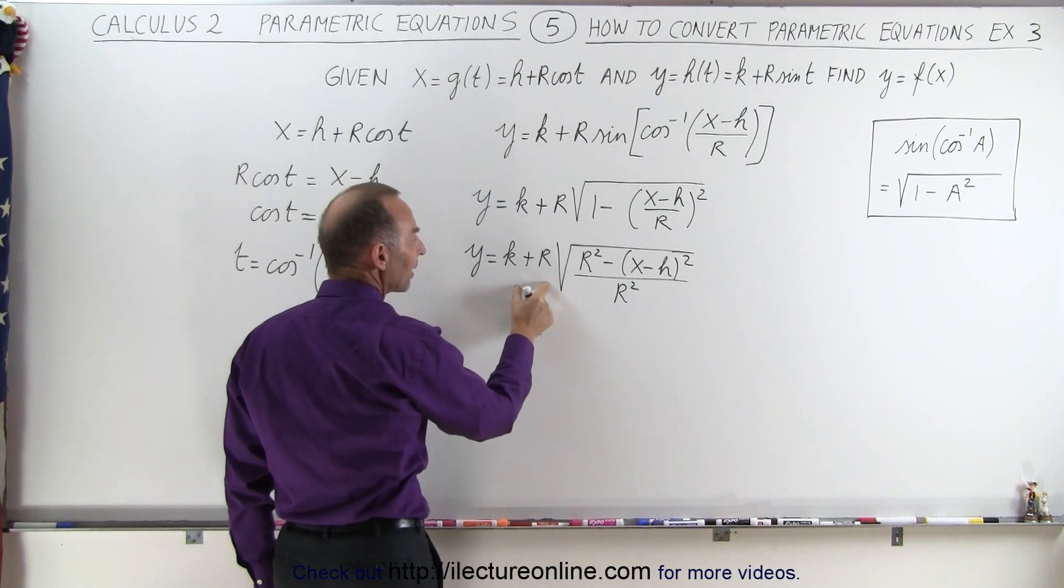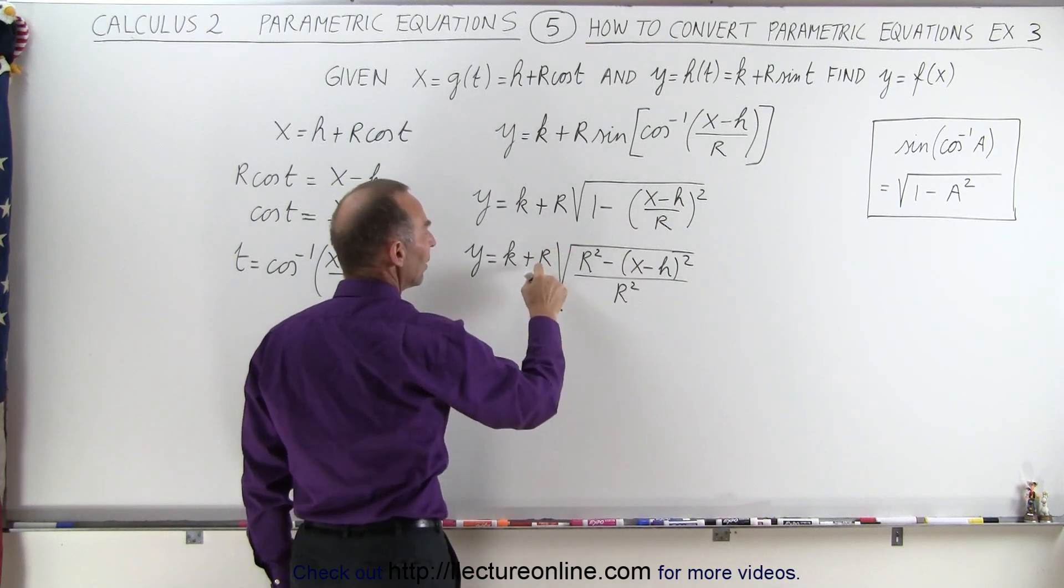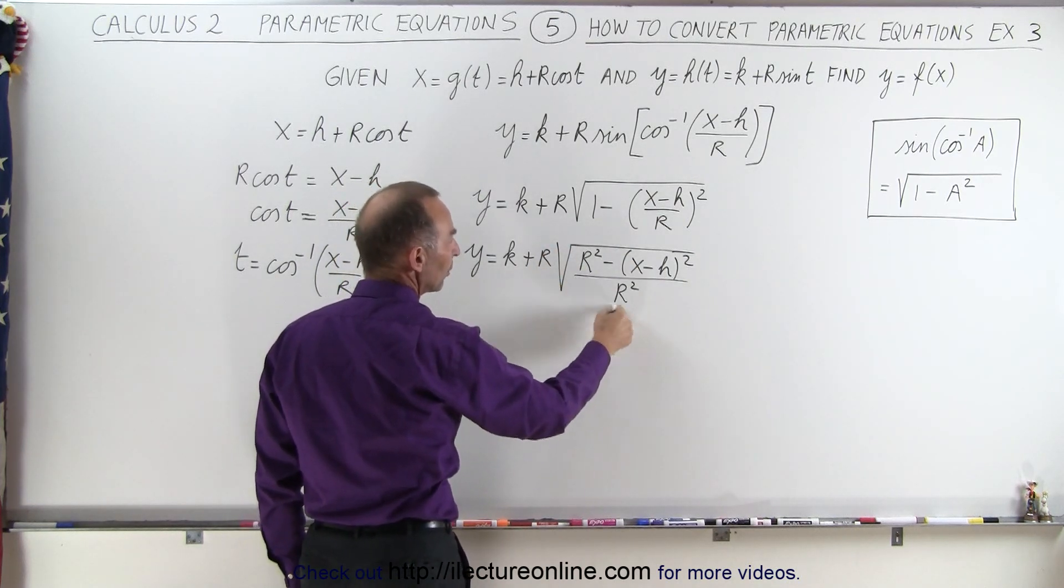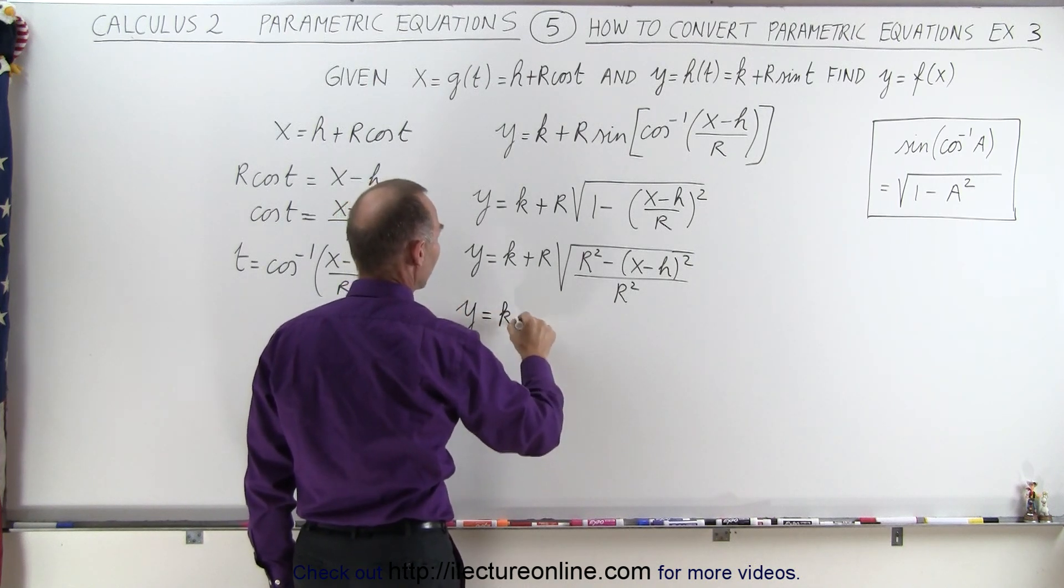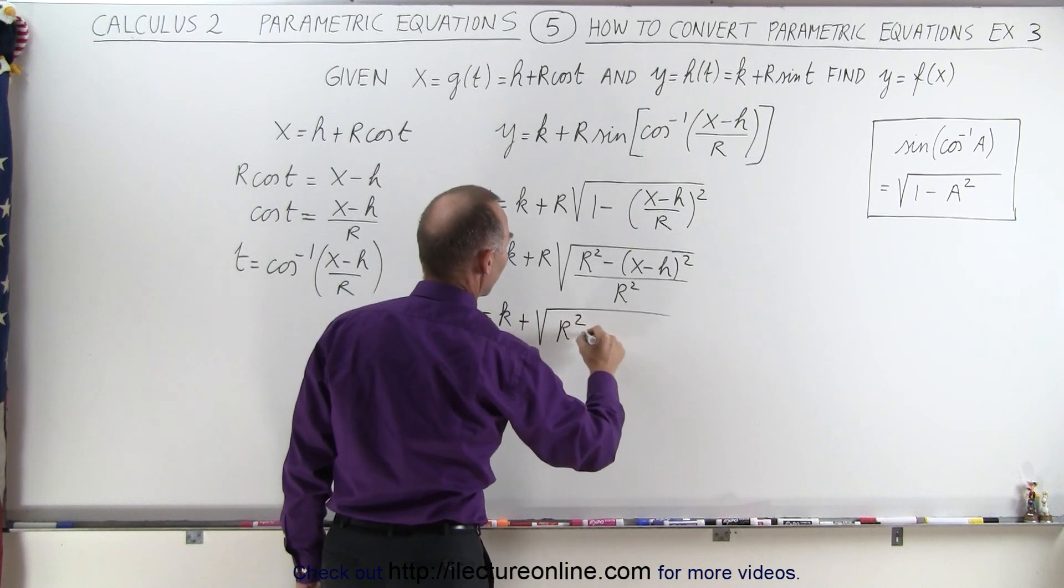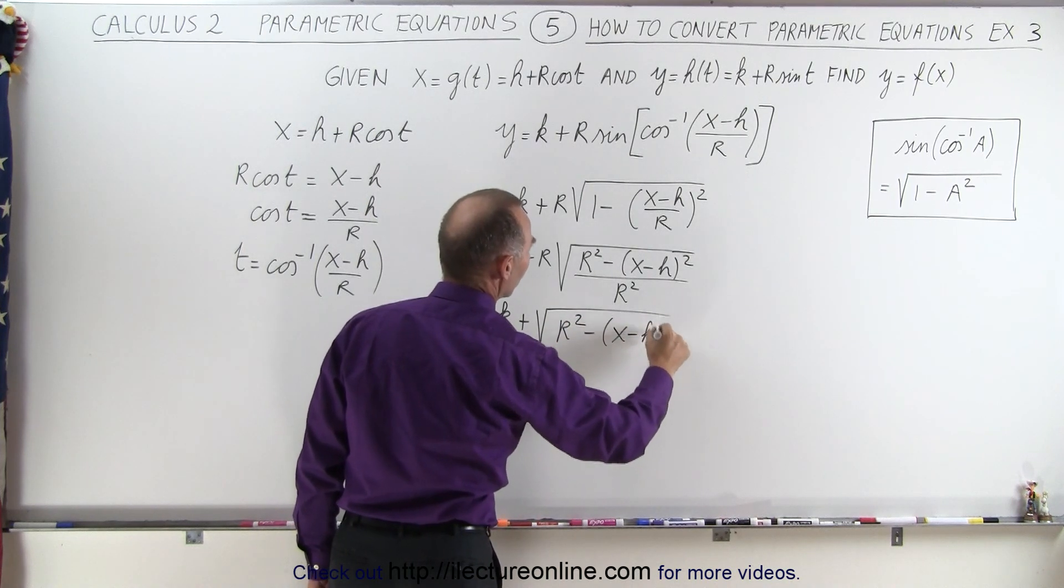This can then come outside the radical sign and R divided by the square root of R squared. Well, that cancels out, so we get Y is equal to K plus the square root of R squared minus the quantity X minus H squared.